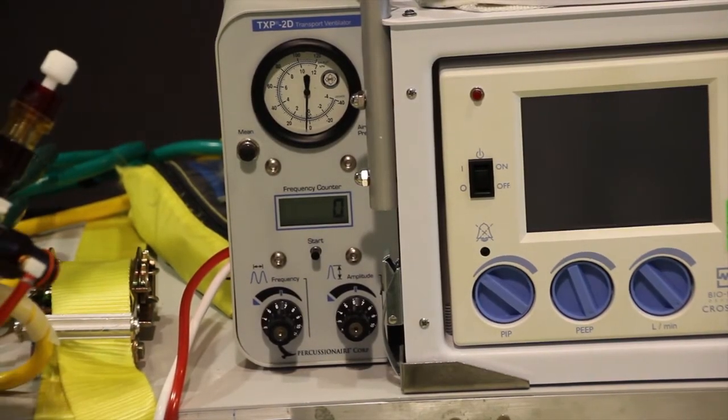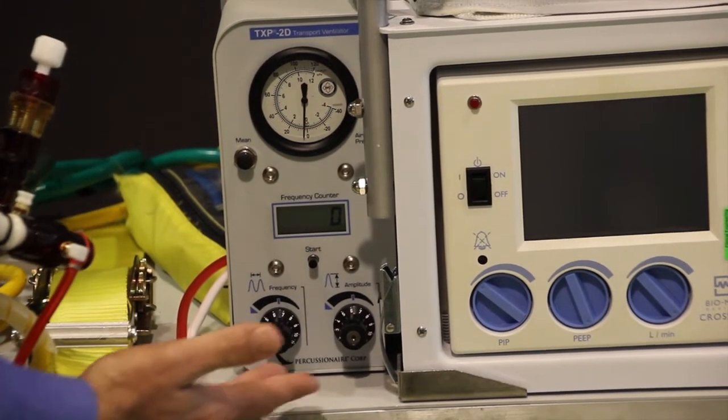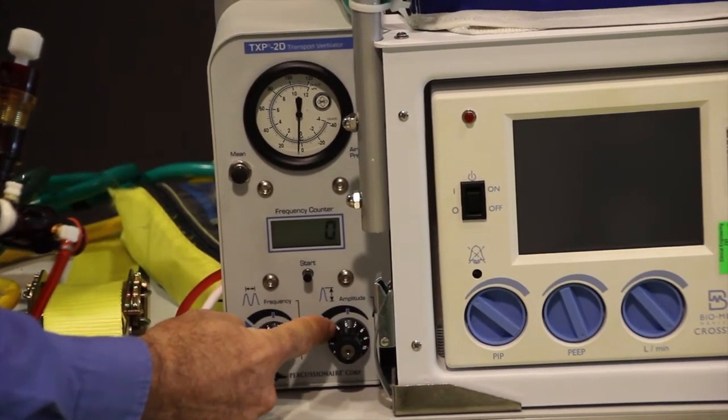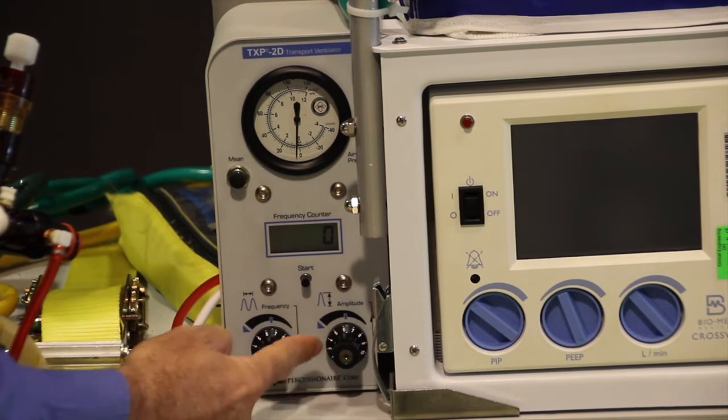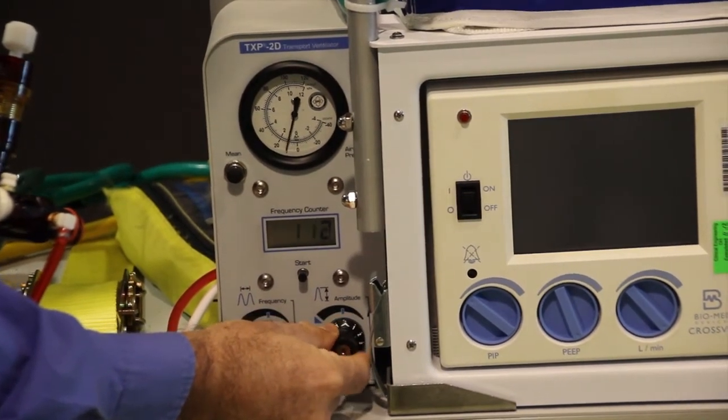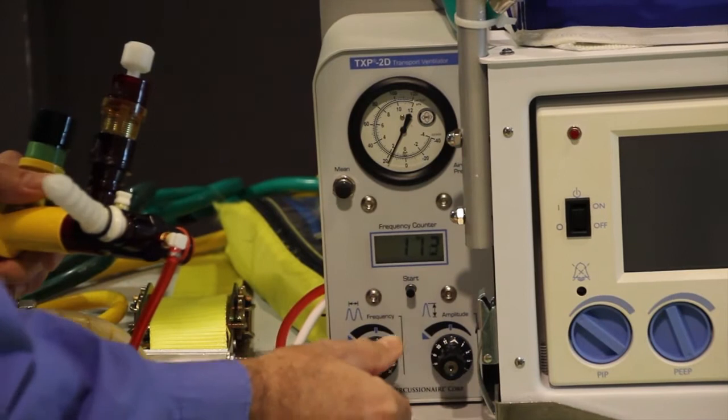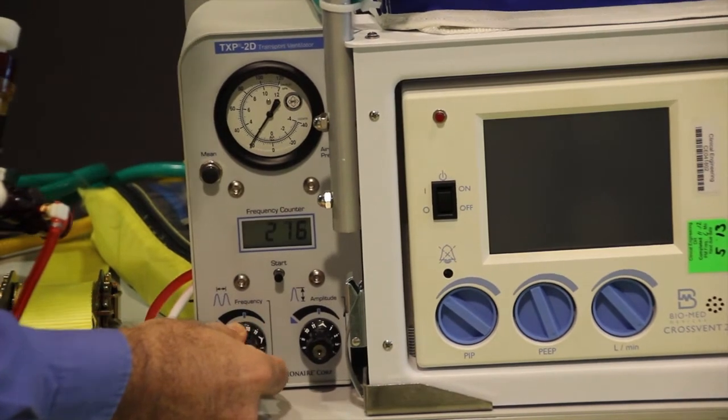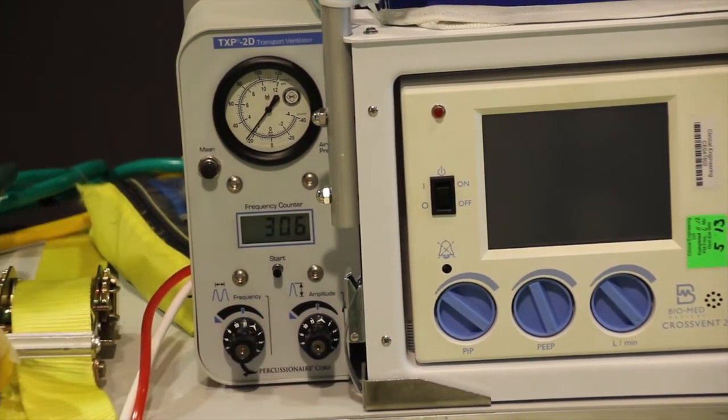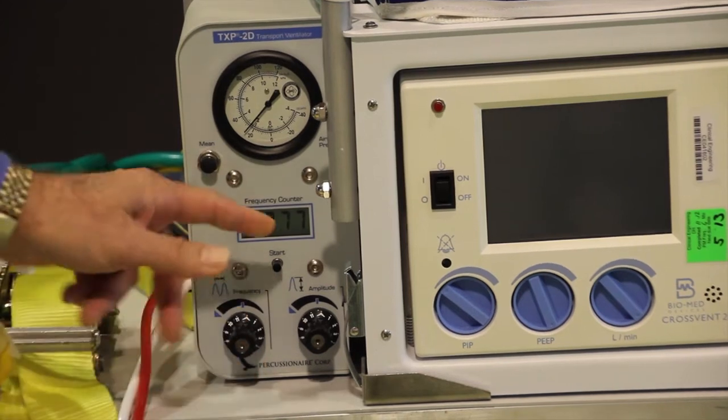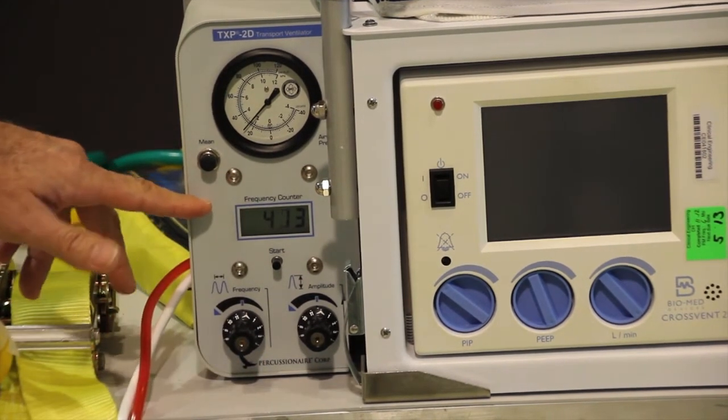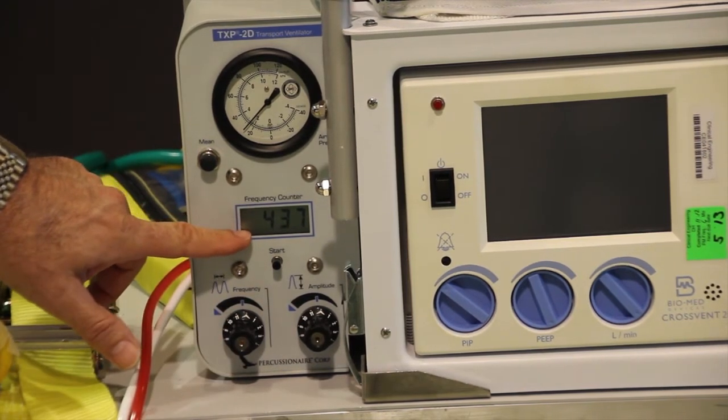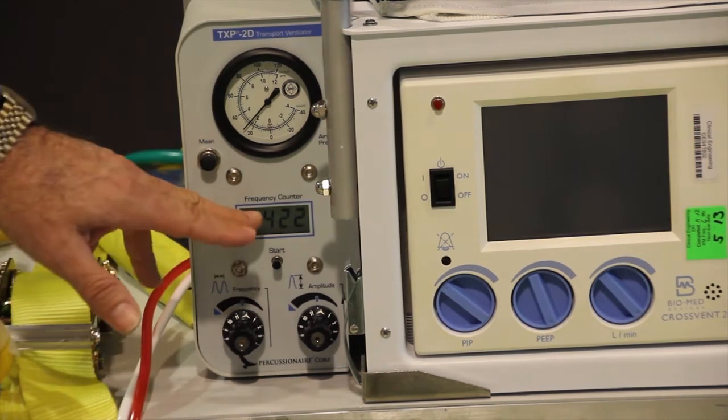We're going to convert the patient from the oscillator to the TXP. What we'll do is start off with the amplitude knob. As I said earlier, these numbers are just a reference point. I'm typically going to start this up around the 10 to 12 range just to give us some flow. Amplitude controls your tidal volume or your flow. I'll set the frequency, probably around 10 or 12, but ultimately I would adjust this down to about the 400 range. We're at about 420 right now, so I'm probably pretty good on my frequency.